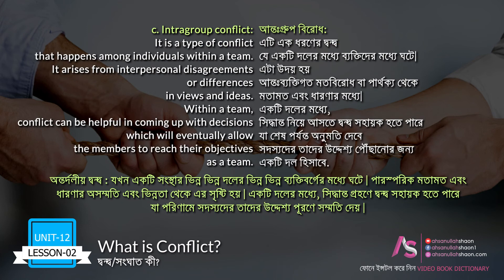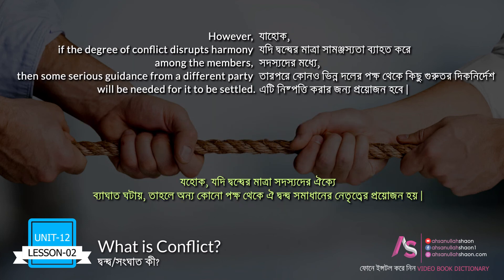C: Intragroup conflict — it is a type of conflict that happens among individuals within a team. It arises from interpersonal disagreements or differences in views and ideas within a team. Conflict can be helpful in coming up with decisions which will eventually allow the members to reach their objectives as a team. However, if the degree of conflict disrupts harmony among the members, then some serious guidance from a different party will be needed for it to be settled.